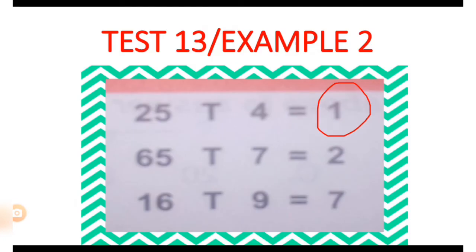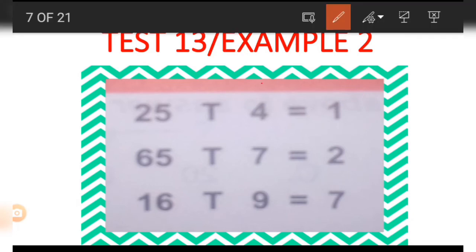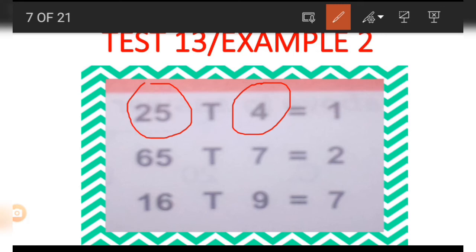However, having gotten the number on the right-hand side of the equality sign, getting the other two numbers is a bit tricky. We don't have a direct method for finding them; what we do is make use of the options that are given and test those options to be able to get the 4 and the 25.